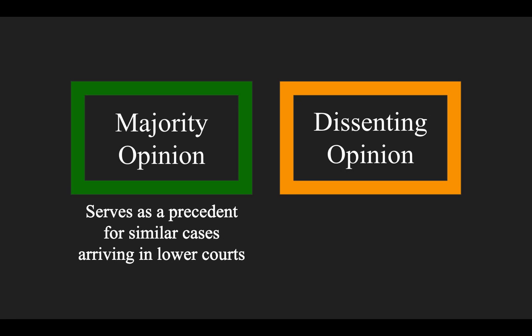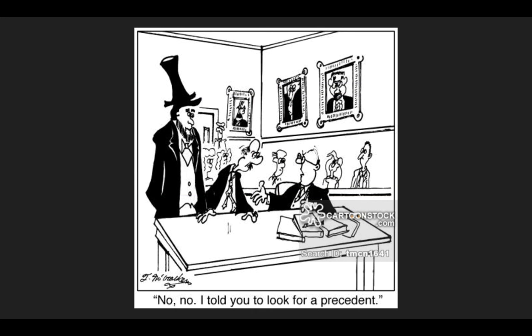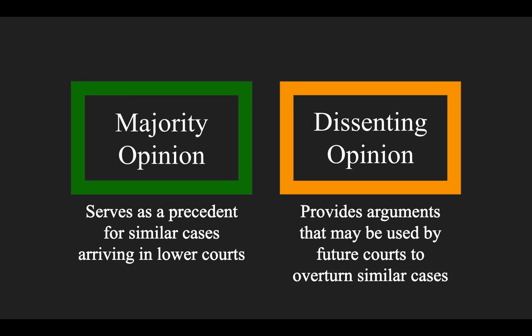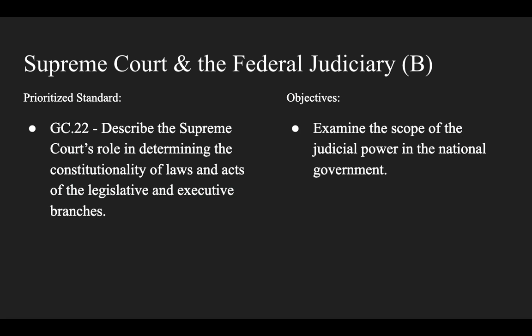As the Supreme Court has the final authority in many cases, majority opinions will serve as legal precedents — examples to be followed in similar cases arising in lower courts. The dissenting opinions provide arguments that may be used by future courts to overturn similar cases. That concludes Supreme Court and the Federal Judiciary Section B Lecture. Our prioritized standard was Government Civics Standard 22, and objectively, now you can examine the scope of the judicial power in the national government.